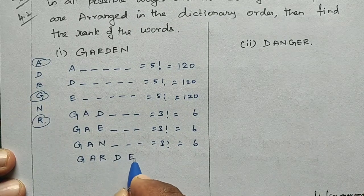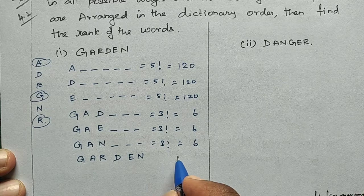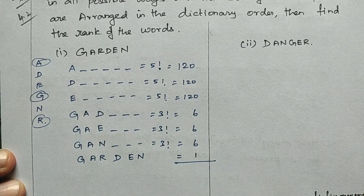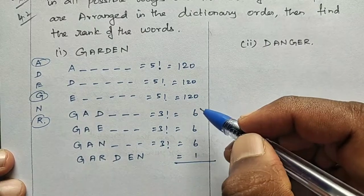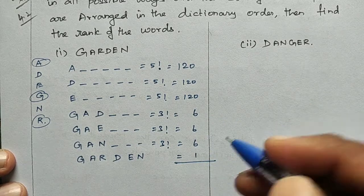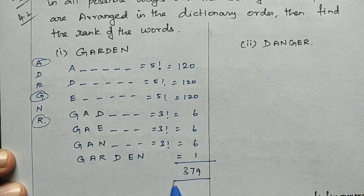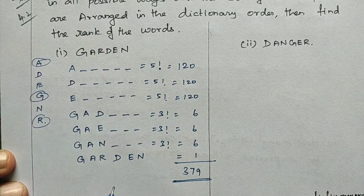GARDEN arranged in order equals 1. So total rank = 360 + 18 + 1 = 379. The rank of the word GARDEN is 379.